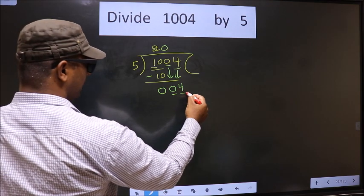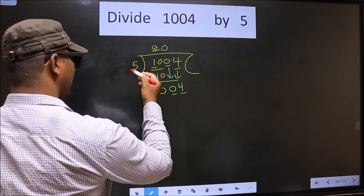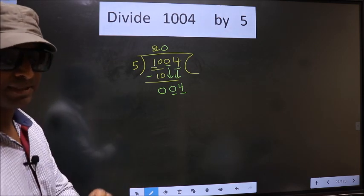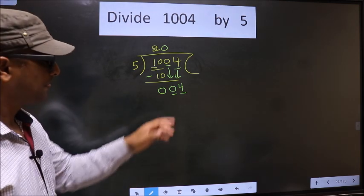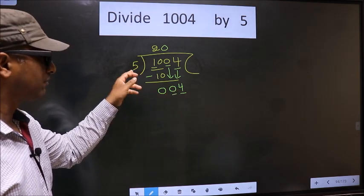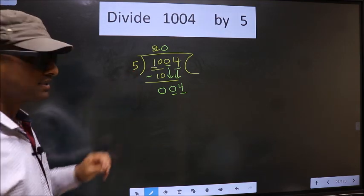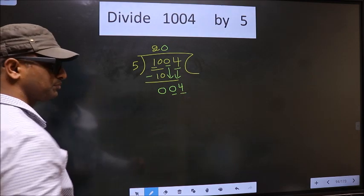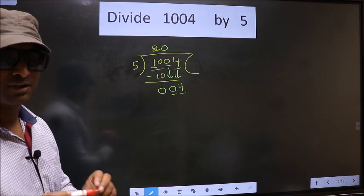Now here we have 4. Here we have 5. This is where the mistake happens, and the mistake is this: 4 is smaller than 5, so what many do is they put a dot and take 0 here, which is wrong.